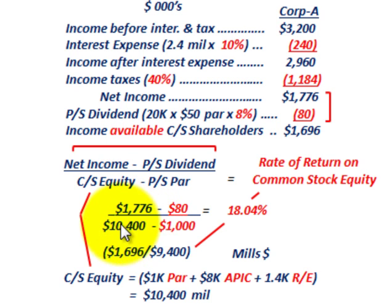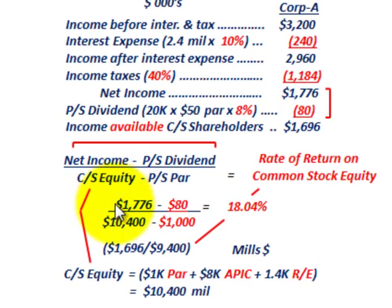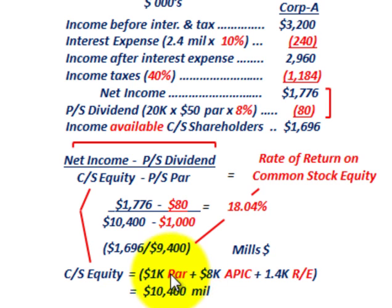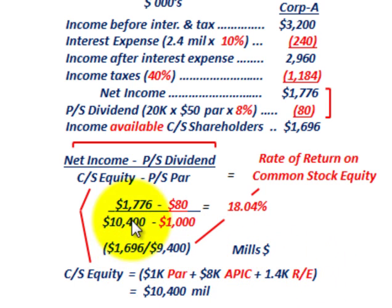In our denominator, we have $10,400,000, which is our common stock equity. That's the $1,000,000 par value on our common stock, plus the $8,000,000 additional paid-in capital for common stock, plus the $1,400,000 in retained earnings — totaling $10,400,000. So common stock equity equals the par value of common stock plus additional paid-in capital plus retained earnings.